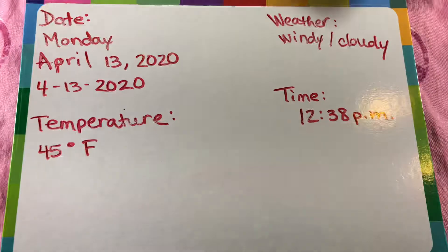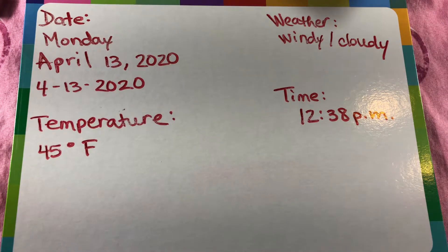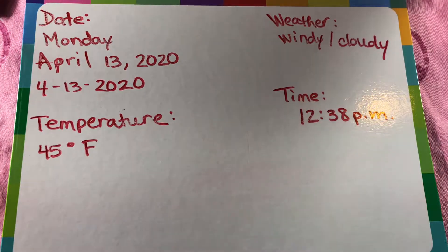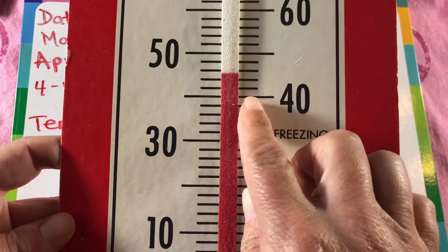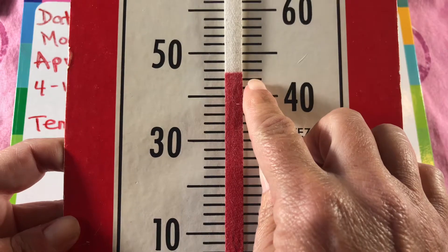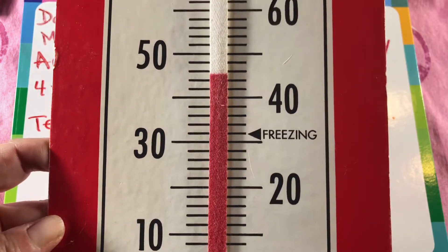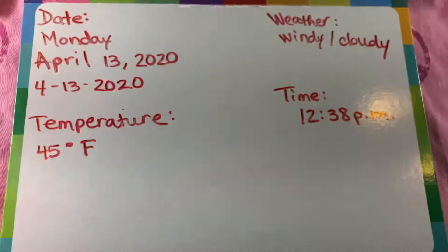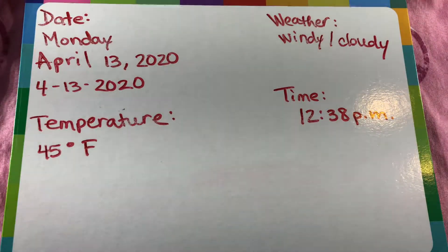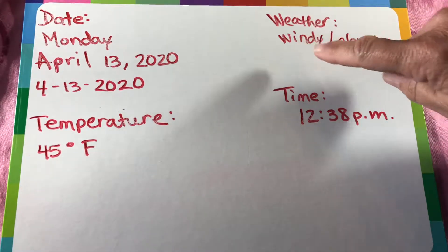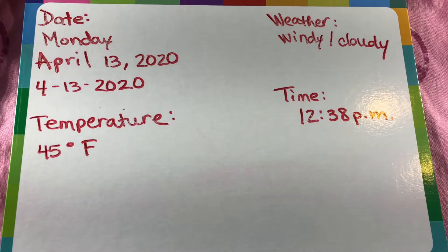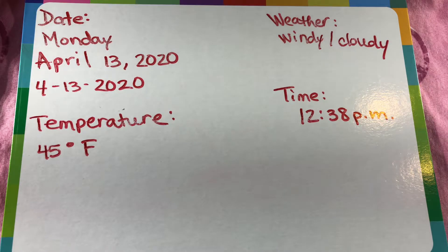Monday, the temperature is 45 degrees Fahrenheit. Here is 40, 42, 44 — 45 is in between those two. As we all know, it is very windy and cloudy. Those are both two words that have a Y at the end, are two syllables — therefore that Y makes the E sound at the end of those words.